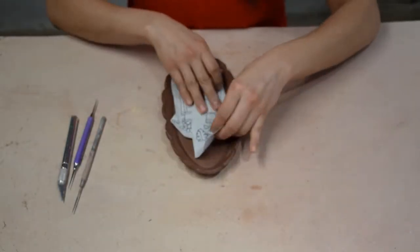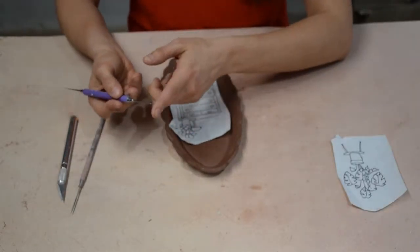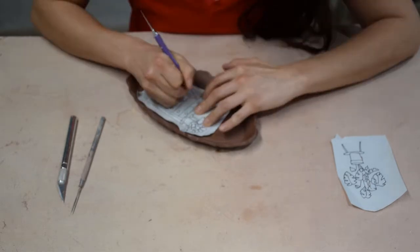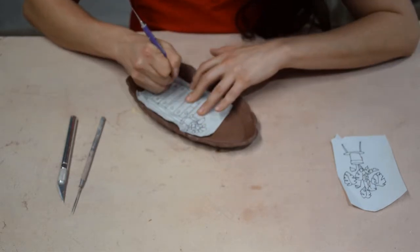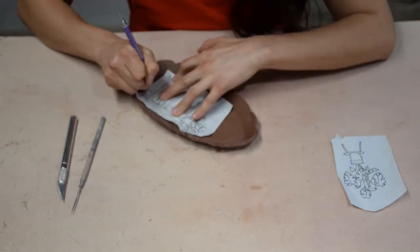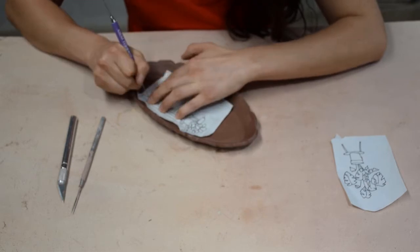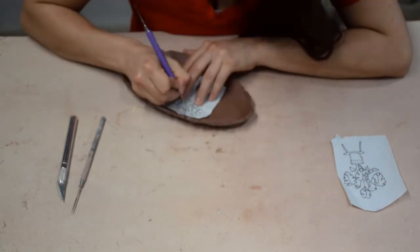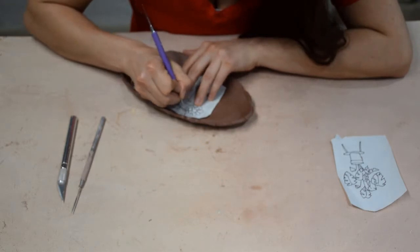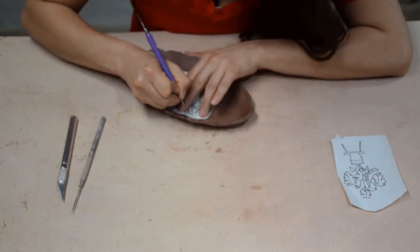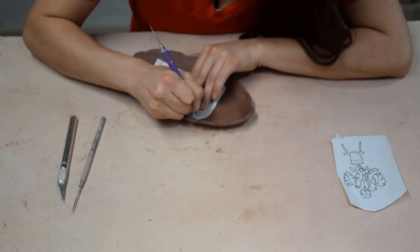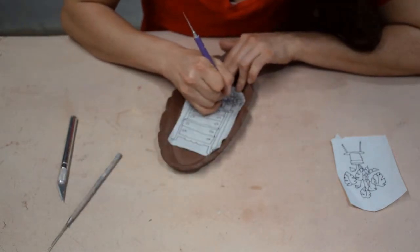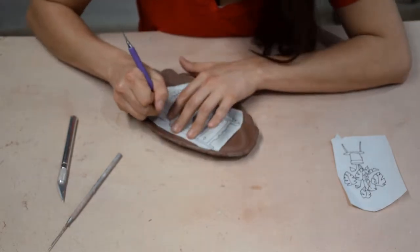I'm placing my image onto the plate and I'm going to trace my drawing with my precision double ball tool. At this moment I'm just adding pressure to my image. You can also do this with a pencil or use a pen. If you're freehand drawing, you don't need to trace your image, you can just go ahead and start creating your marks onto your leather hard piece.